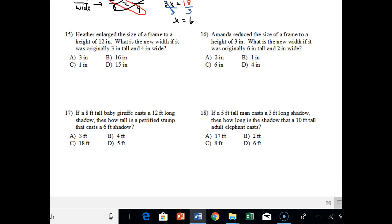All right. Number 15, it says Heather enlarged a size frame to a height of 12 inches. What is the new width if it was originally 3 inches tall and 4 inches wide? So again, we're comparing tall and wide. And this time, they actually give you the first complete ratio in the second sentence, right? So it says 3 inches tall to 4 inches wide. So 3 inches tall to 4 inches wide. Then if you go back to the first sentence, it says Heather enlarged the size of a frame to a height of 12 inches. So height would be how tall something is. So 12 actually goes on top this time. And our x goes on bottom because we need to figure out what would the new width be?